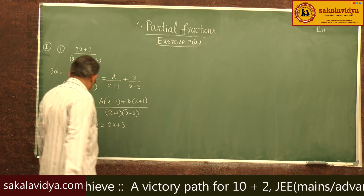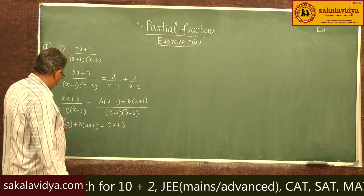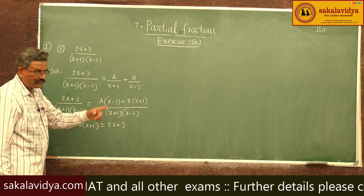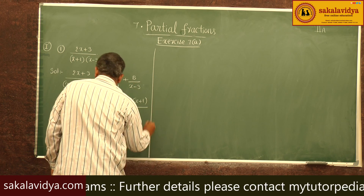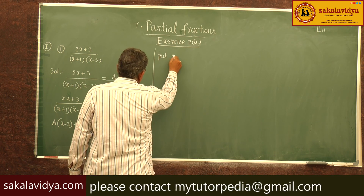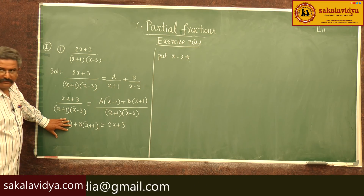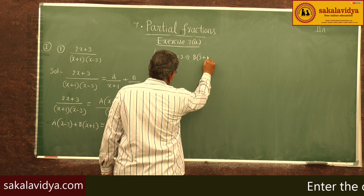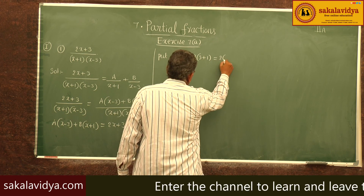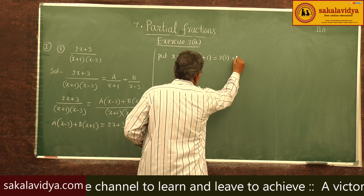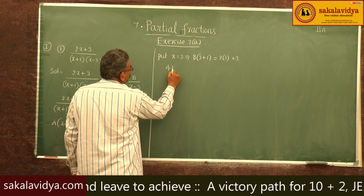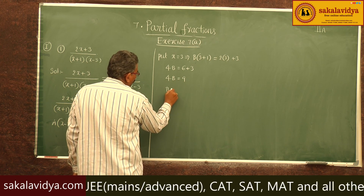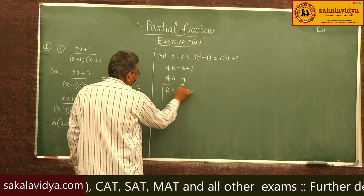Since x minus 3 and x plus 1 are the linear factors, the zero of (x minus 3) is 3 and the zero of (x plus 1) is minus 1. Put x equal to 3: the A term becomes 0, giving B times (3 plus 1) equals 2 times 3 plus 3. So 4B equals 9, therefore B equals 9 by 4.